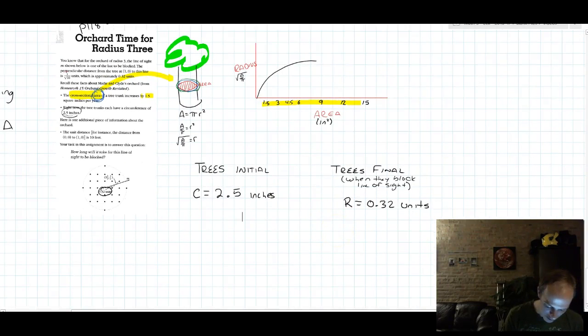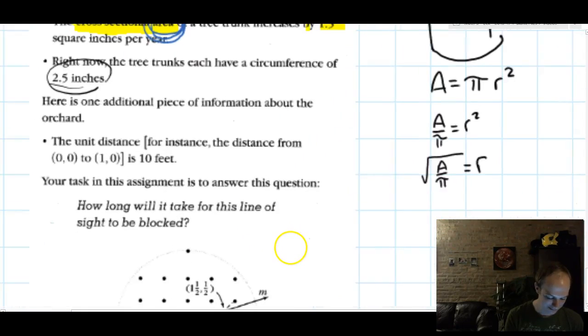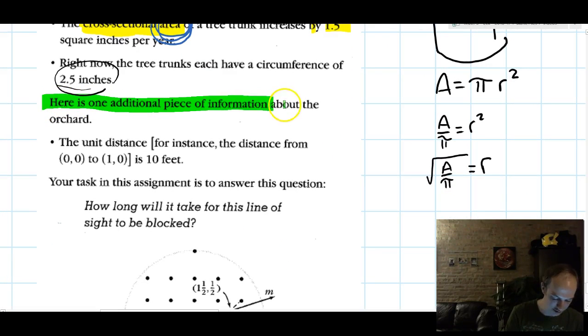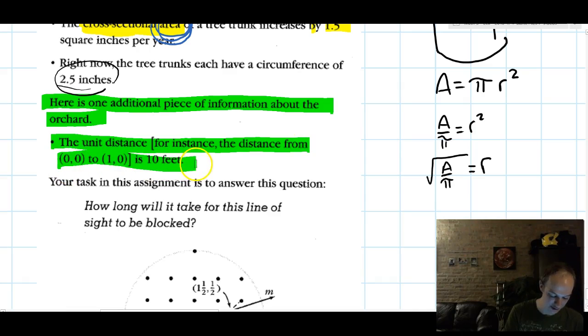So what do we know about these units? Well, the problem tells us, here is one additional piece of information about the orchard: the unit distance from 0,0 to 1,0 is 10 feet.